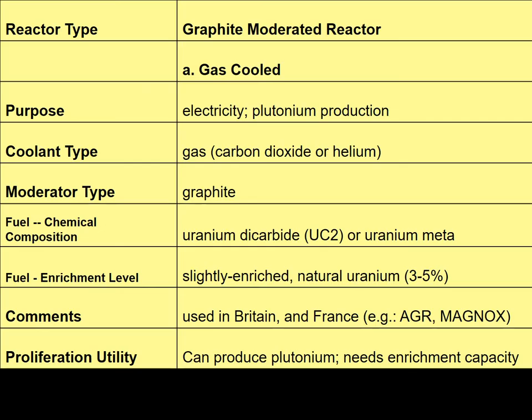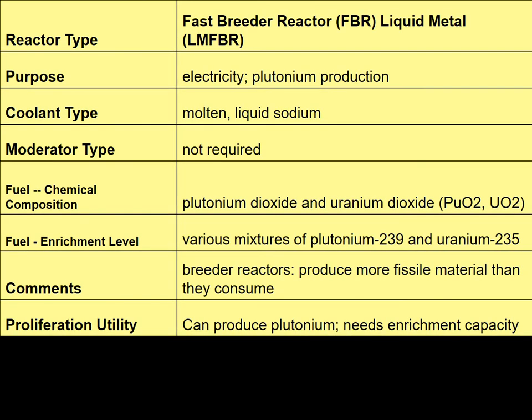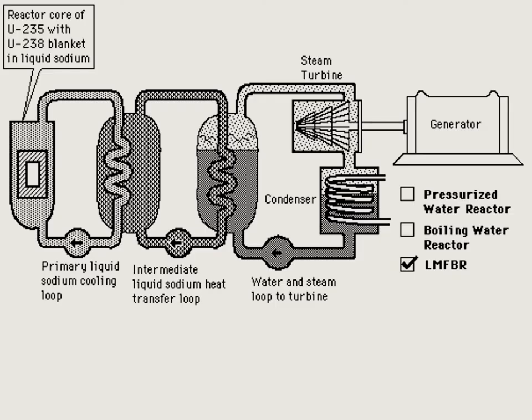Here's a graphite-moderated reactor, which can produce plutonium and is therefore a proliferation concern. There are water-cooled reactors, which are seen as fairly safer. Here you can see a fast breeder reactor, which was such a concern to nonproliferation efforts in the 1970s and 1980s, along with a graph of how a breeder reactor works.